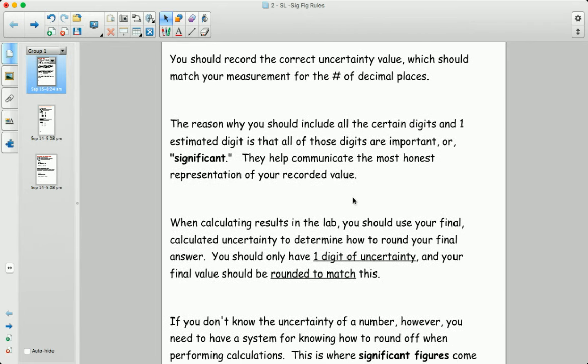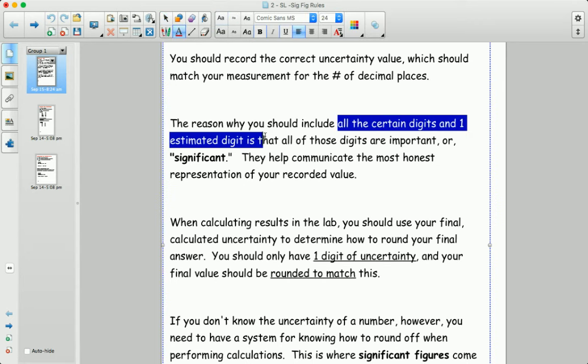The reasons why you always want to record all of the certain digits as well as the one estimated digit, which is what we've talked about before, is that all of these digits are important or they are what we could call significant. They matter.